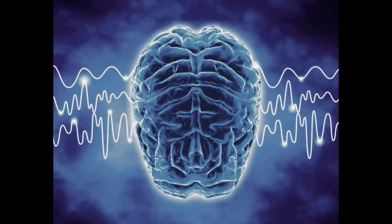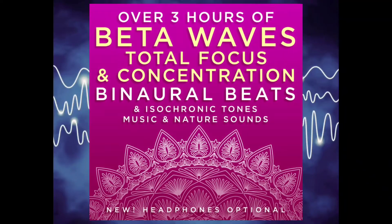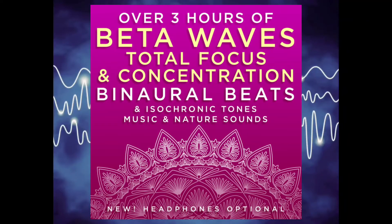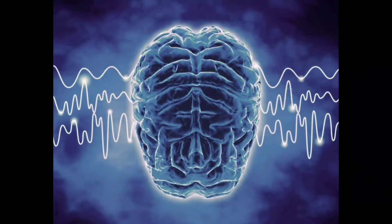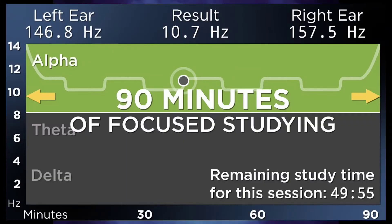The last one is Beta. This frequency is 14 to 30 Hz. This is used for concentration, alertness, decision making, and memory.